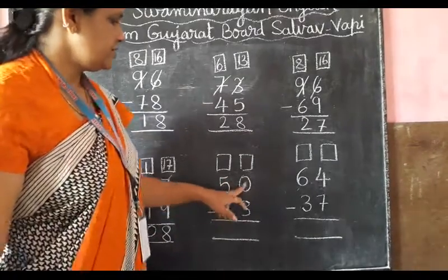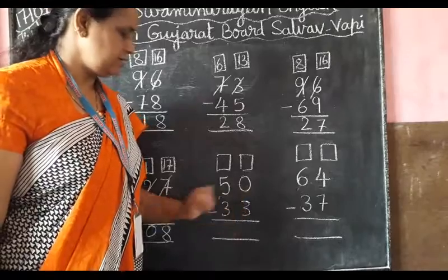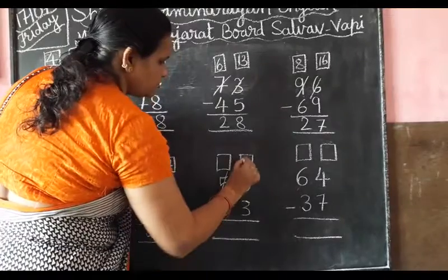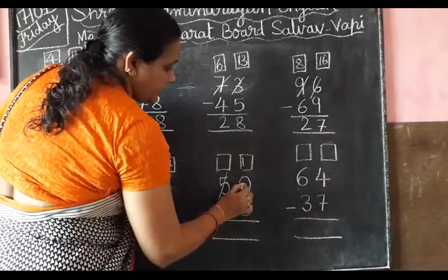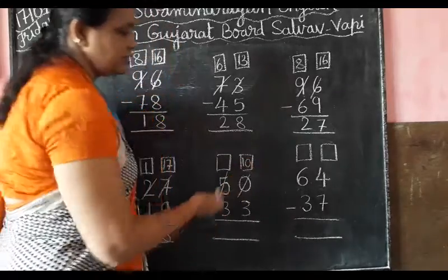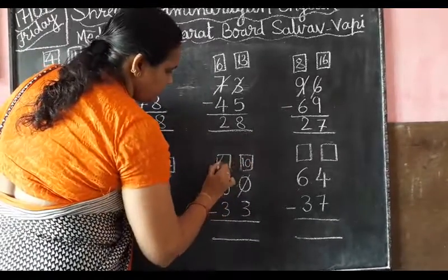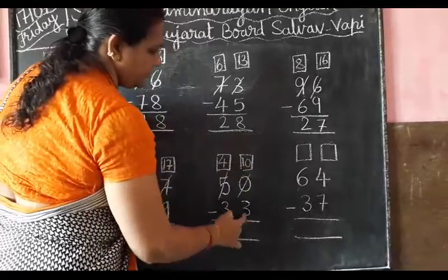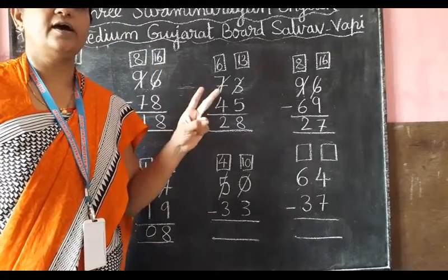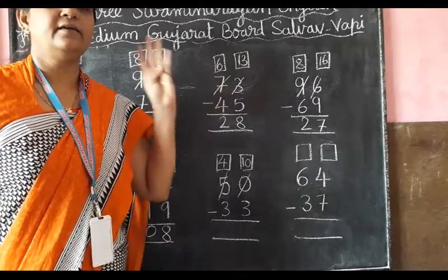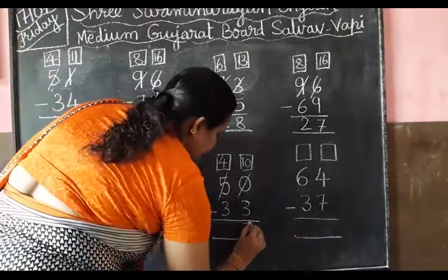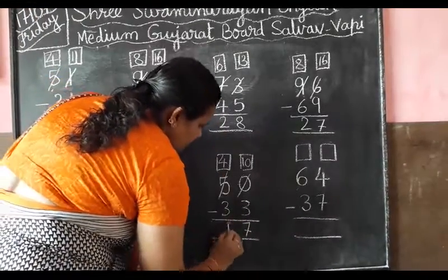Look at here. Here 0 is there and 3. From 0 we can't cut 3. Again we will borrow from 5 to 1 here, and this is 0. So cut the 0 and put here — now it will become 10. Now here 4. From 10 we have to cut; now easily cut 3. After 3: 4, 5, 6, 7, 8, 9, 10. Then 4 minus 3 equals 1.